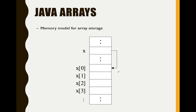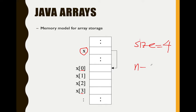This is the memory model for array storage. The name of our array here is array X. The size of our array is actually four. We don't have any elements yet. Based on this, the index starts with zero and ends with three, because using the formula n minus one: four minus one equals three. So it goes zero, one, two, three.